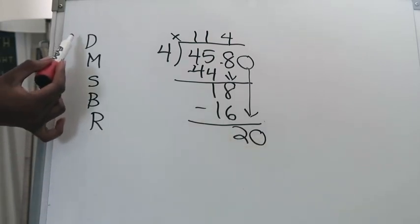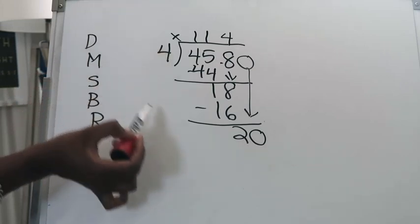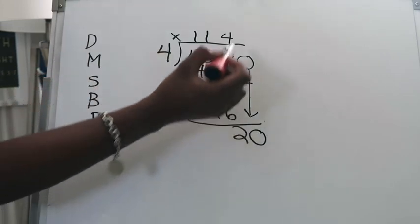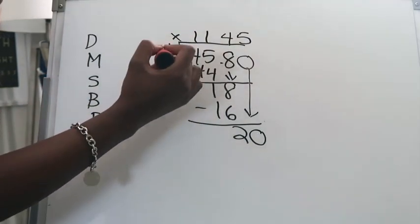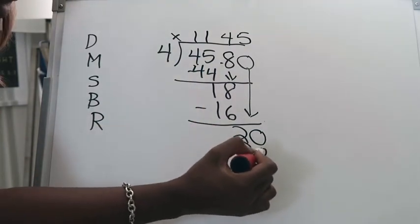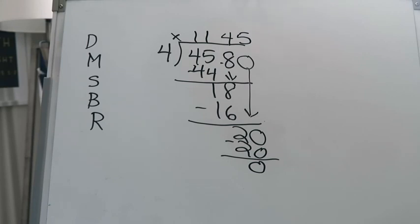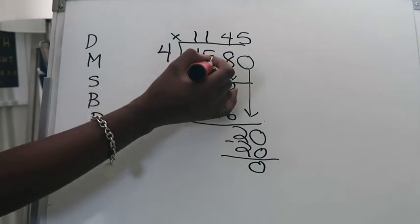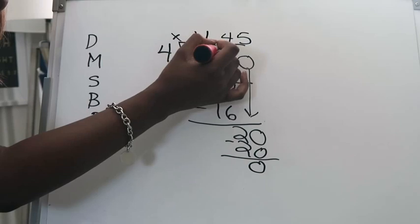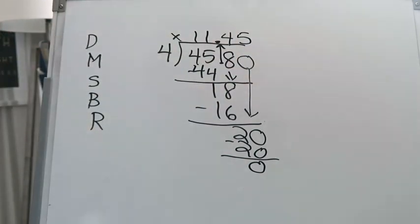So I'm going to put a 0 there so I can bring it down and finish out the problem without a remainder. 4 can go into 20 five times. 5 times 4 is 20 and 20 minus 20 is 0. So the last step is to make sure to remind myself this was a decimal so I need to bring my decimal point up and now I have a quotient to 45 and 8 tenths divided by 4.